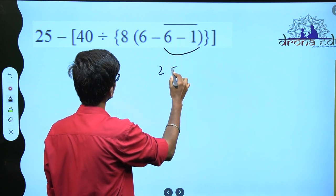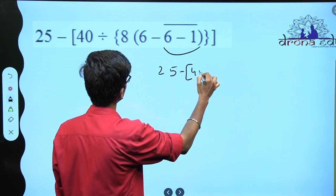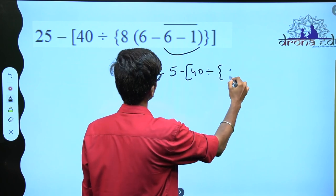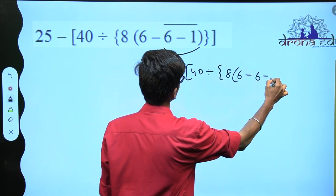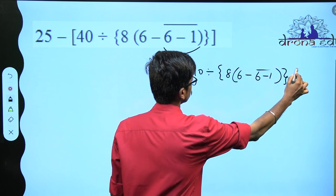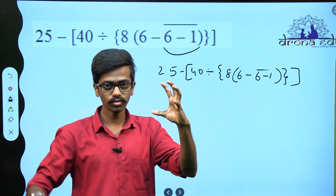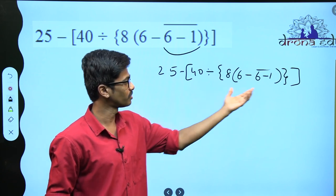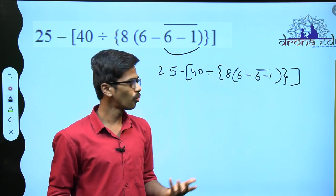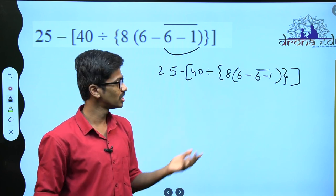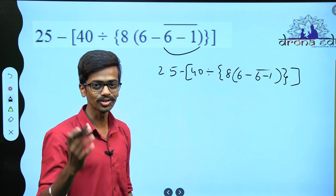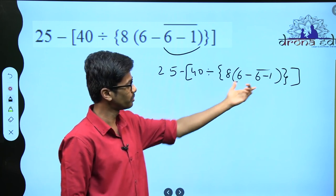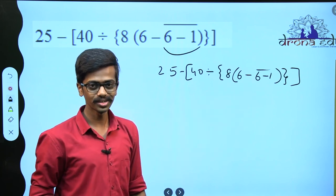Brackets are used for grouping. This is one group — the group that is under the bar. The sum is: 25 minus 40 divided by open square bracket, open curly bracket, 8, open parenthesis, 6 minus 6 minus 1, close parenthesis, close curly bracket, close square bracket. Remember — any bracket that you open will have a closing end, it is like a closed loop. We have all these different kinds of brackets to make maths beautiful and help you remember them properly.